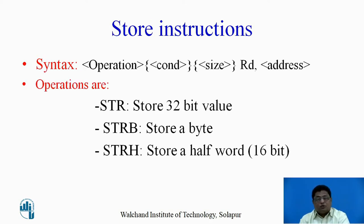Next is the store instruction. The syntax is: first the operation, then the condition, then the size of the value to be stored, then the register, and the memory address. Store operation means data flows from the register into memory. Three different store operations are defined: STR stores a 32-bit value, STRB stores a byte value, and STRH stores a half word, that is a 16-bit value.